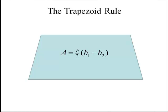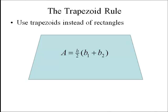This video is intended to give a brief introduction to the trapezoid rule, which instead of rectangles uses trapezoids to estimate the area under a curve. The area of a trapezoid is the height of the trapezoid divided by two times base one plus base two.